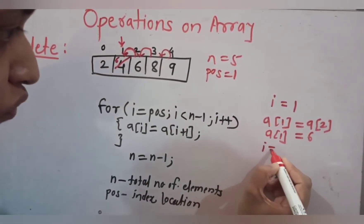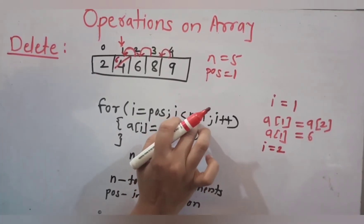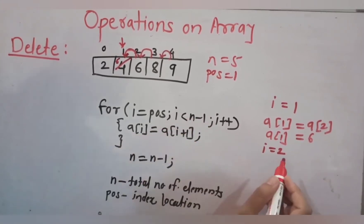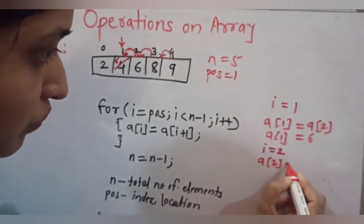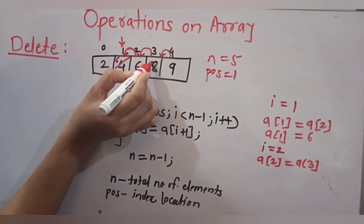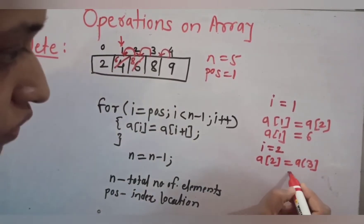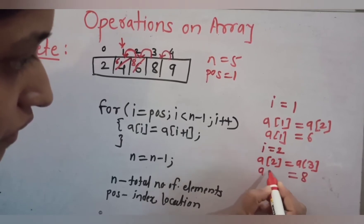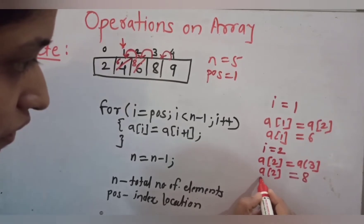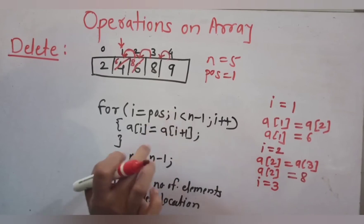After i++ , i becomes 2. n is still 5, so 2 < 4 is true. We perform a[2] = a[3]. Since a[3] is 8, that value is copied in place of 6 — so a[2] becomes 8. After another i++, i becomes 3. Again 3 < 4 is true.